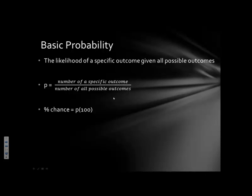Basic probability is the likelihood of a specific outcome given all possible outcomes. It starts as a fraction: the number of the specific outcome divided by the number of all possible outcomes. Dividing gives you a decimal — that's your probability. Most people find it easier to interpret probability as a percentage, so you can multiply the probability by 100 to get a percent chance.